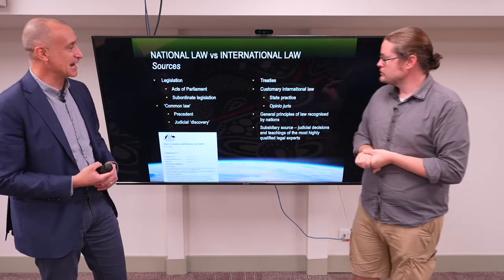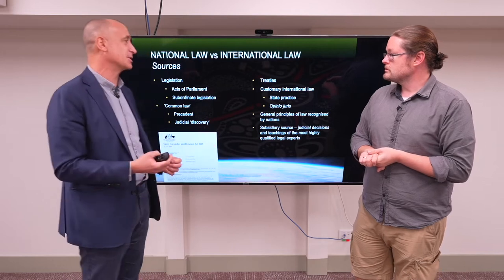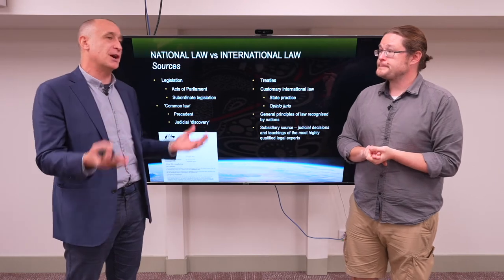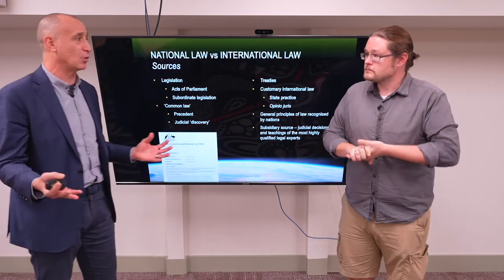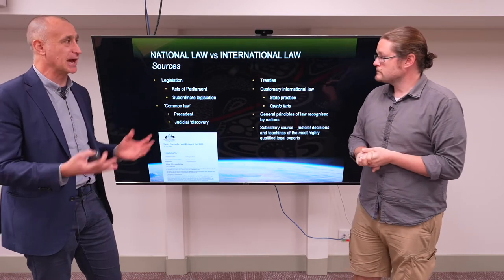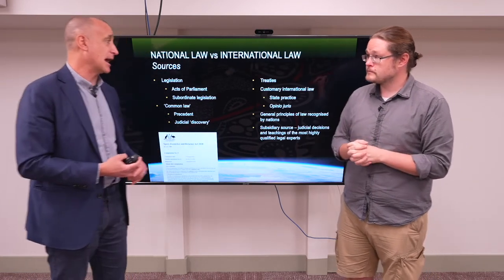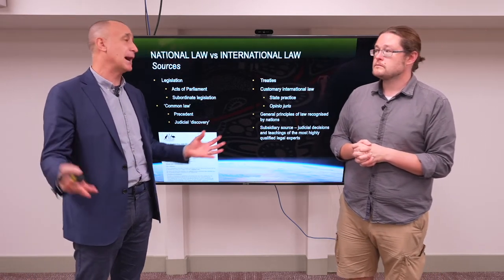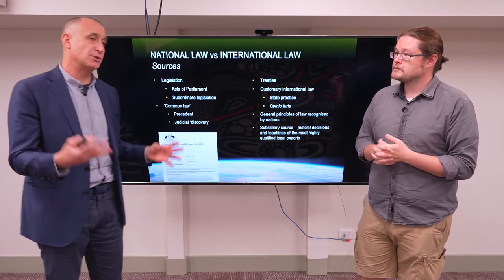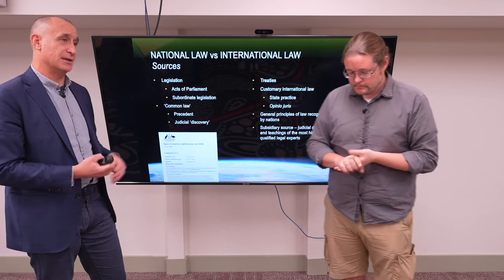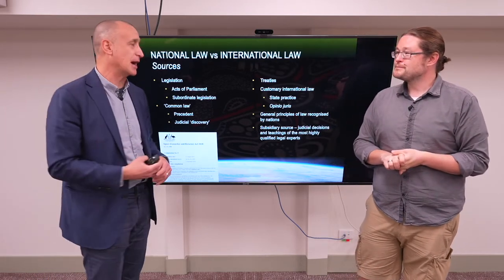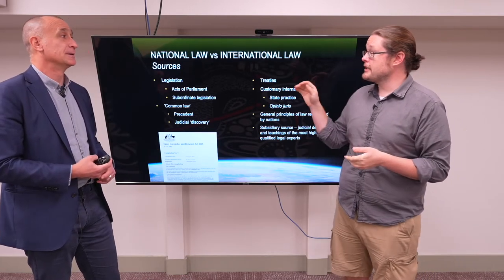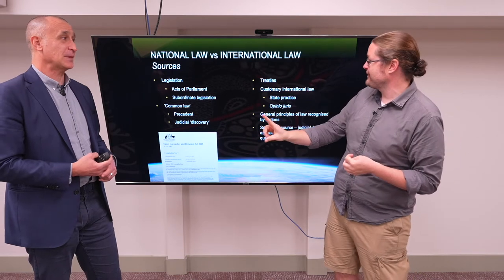In international law, you don't have the equivalent of legislation. You have treaties — because there is no international parliament. The United Nations is not a parliament; it can't make law for all states. Treaties are essentially agreements between states, and they only bind those who are parties to a particular treaty. The Outer Space Treaty has 118 states parties, but that's clearly not all countries.